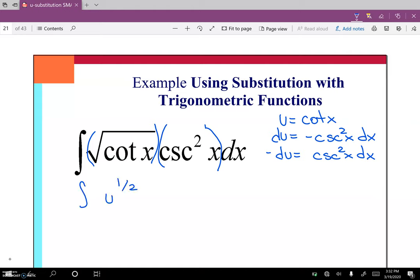So I have u to the one half negative du, which ends up being negative u, and we add one, so it's three halves, all divided by three halves, plus c.